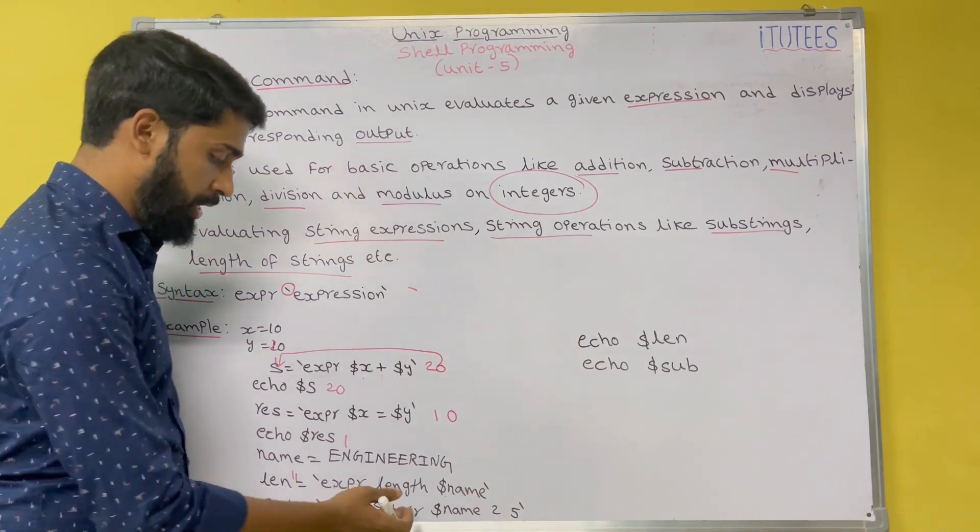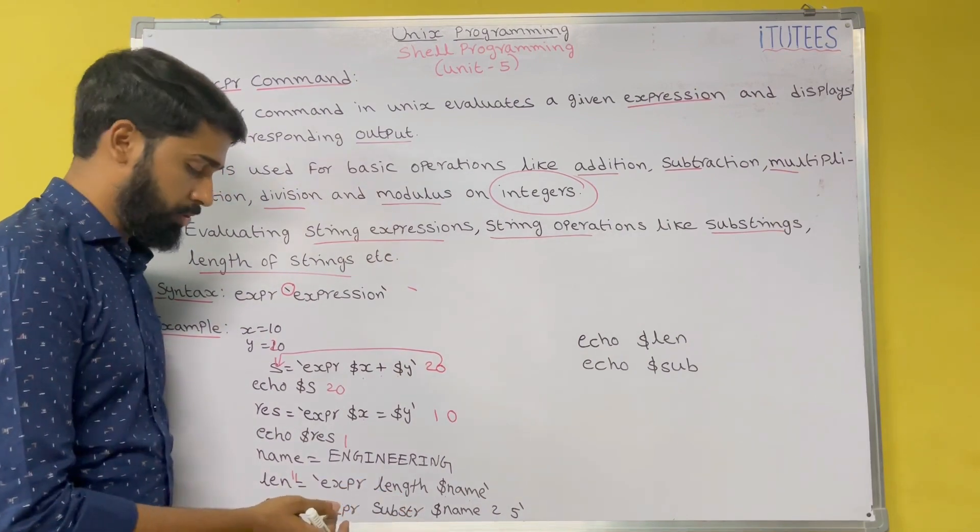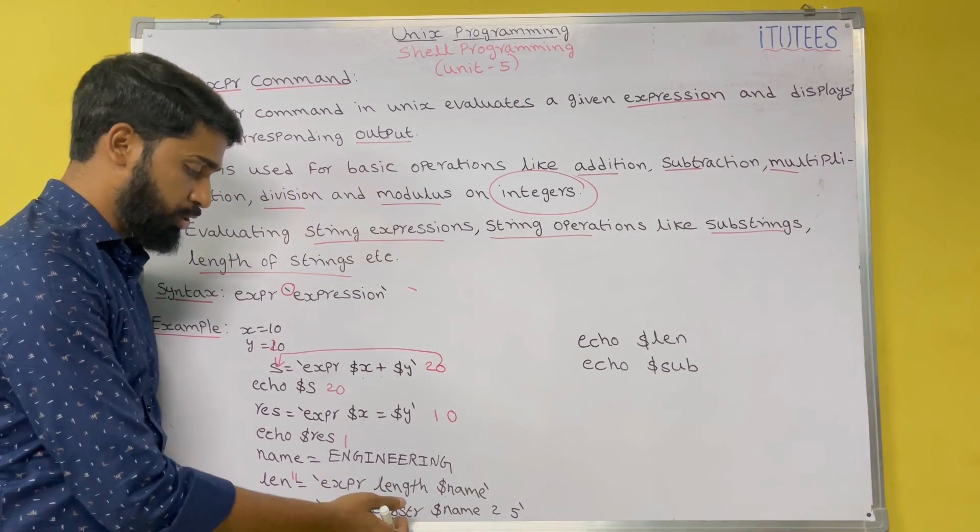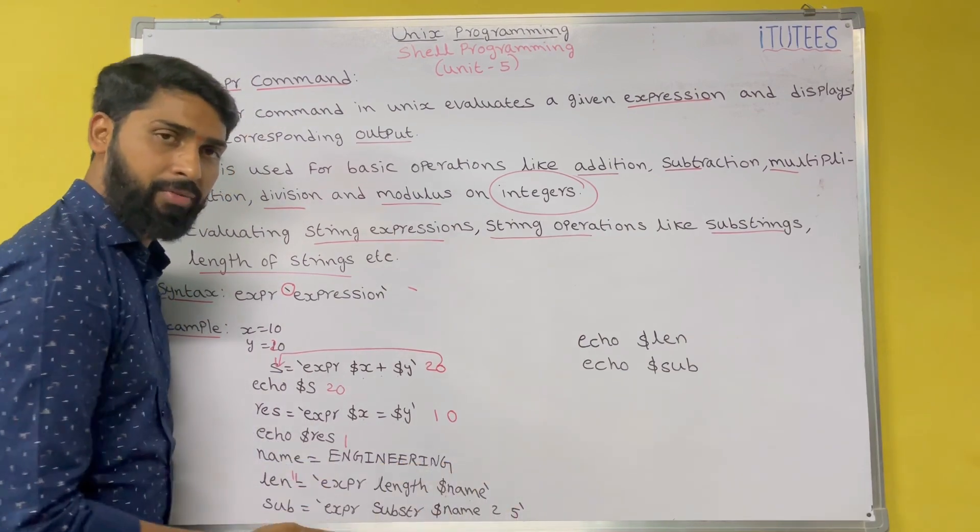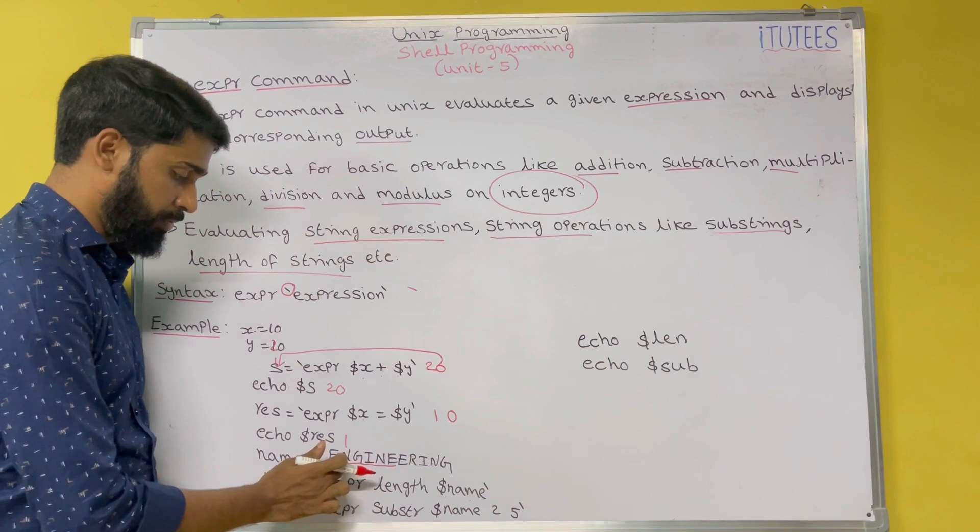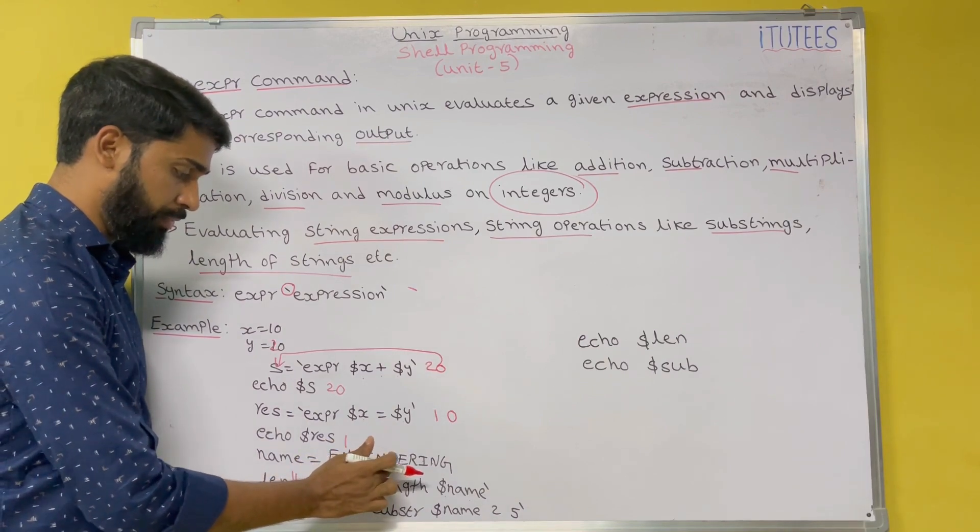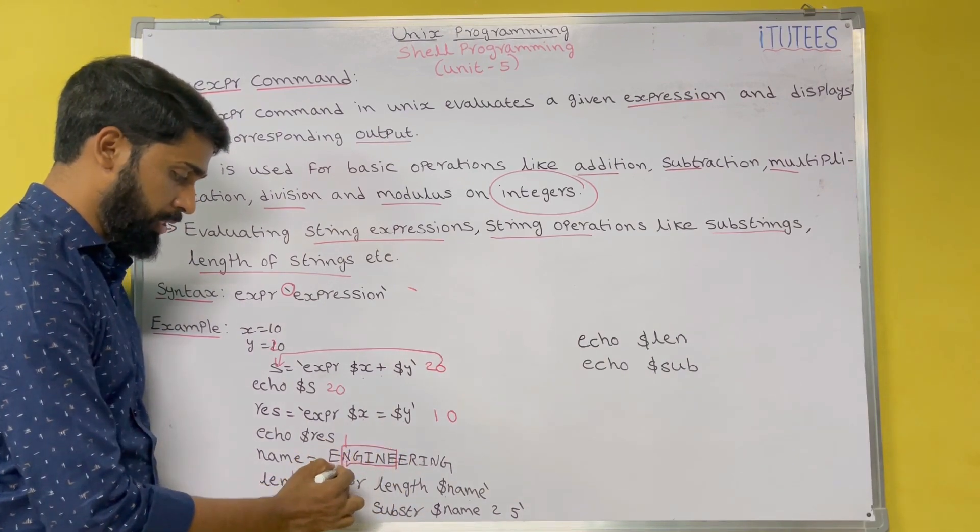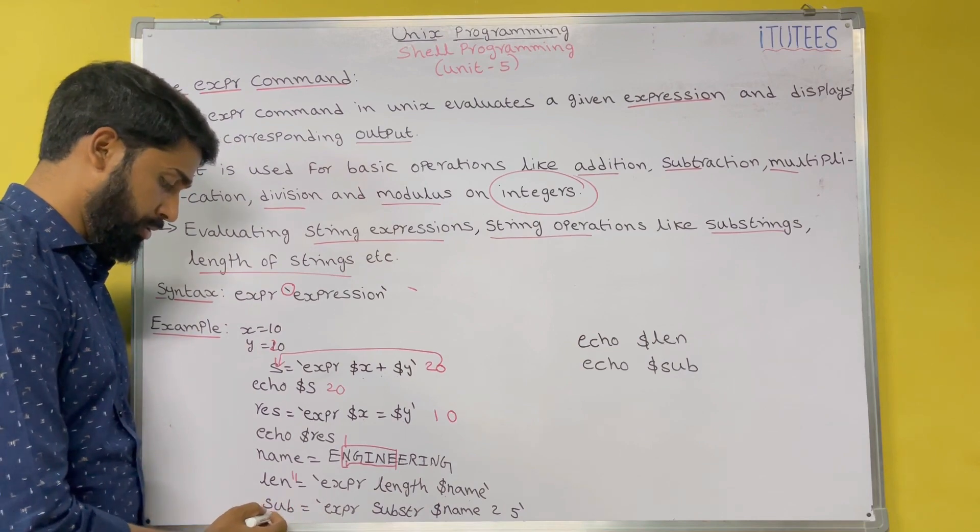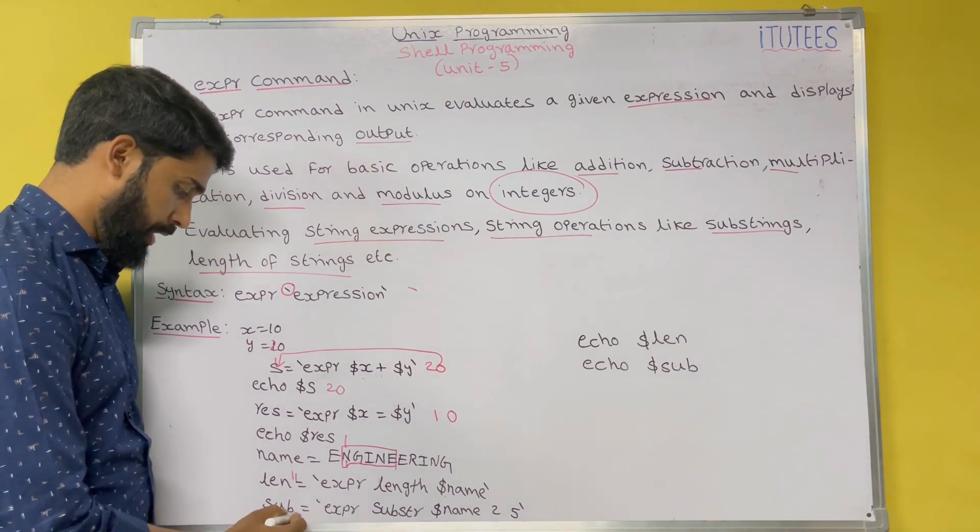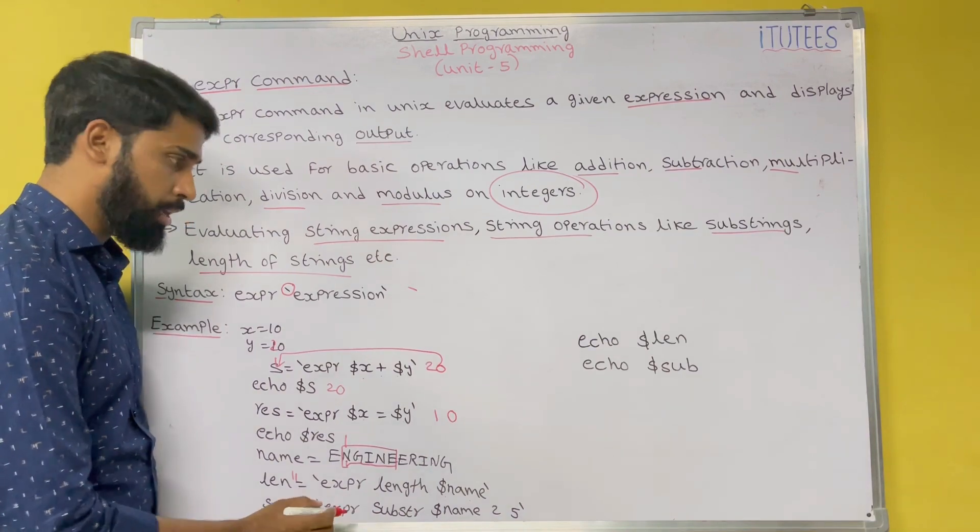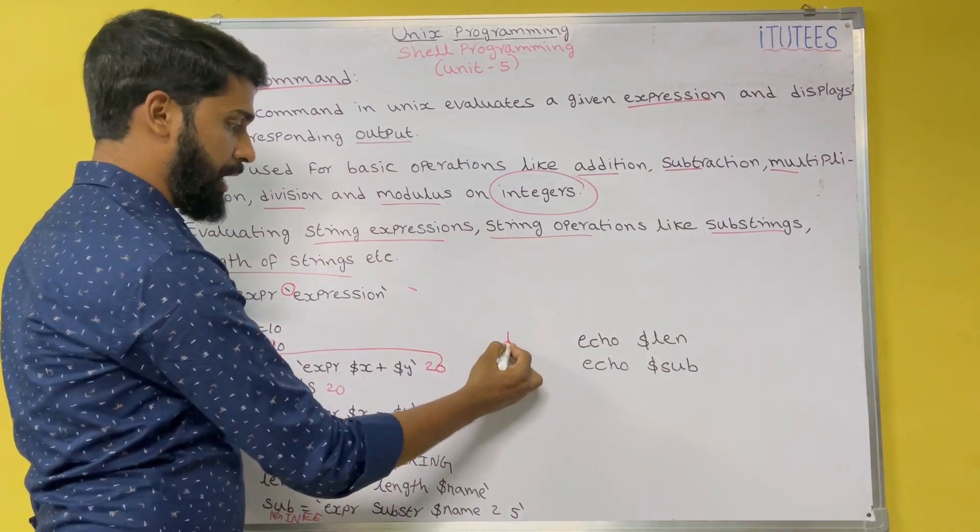And similarly we are going to find the substring also. Expr substr and dollar name. So 2 comma 5, that means from second place to 5, that means 1, 2, 3, 4, 5. So this is the substring in this string and assigned to sub, that means n, g, i, n, e, e. When we print len it prints 11.